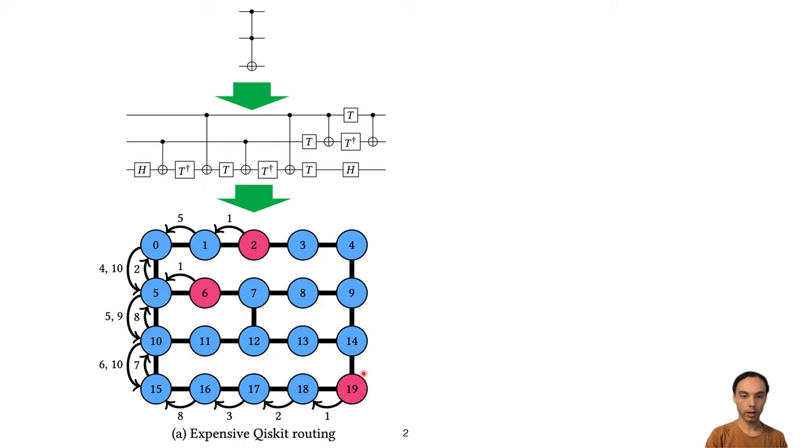And this can result in many extra CNOTs because of the lack of planning due to the heuristics used for these routing algorithms.